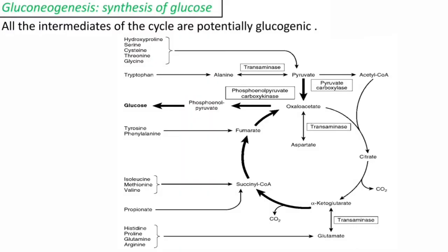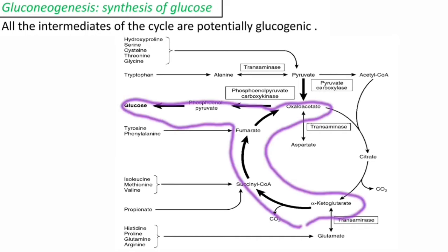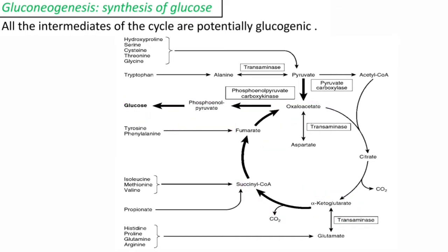Coming to the gluconeogenic role of TCA cycle: the intermediates of the TCA cycle can be used for the synthesis of glucose by gluconeogenesis. For example, succinyl-CoA can be converted into fumarate, fumarate into oxaloacetate, and oxaloacetate into phosphoenolpyruvate, after which the reactions of gluconeogenesis take place for glucose synthesis. Succinyl-CoA is formed from amino acids like isoleucine, methionine, and valine, and also from propionate. These amino acids — valine, isoleucine, methionine — are called glucogenic because their carbon skeleton is used for glucose synthesis.